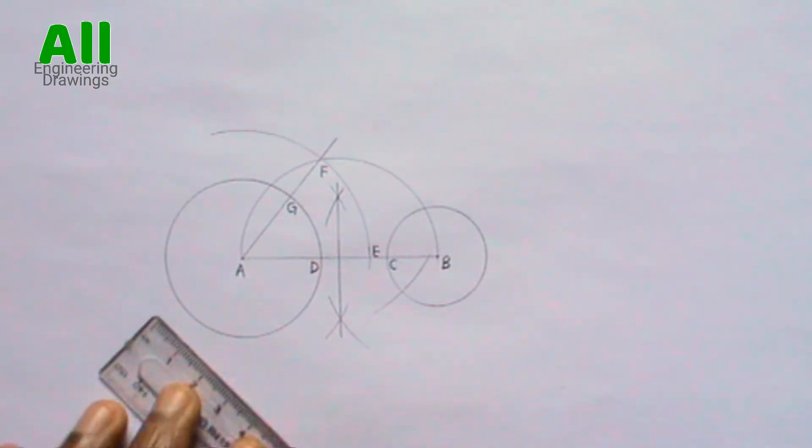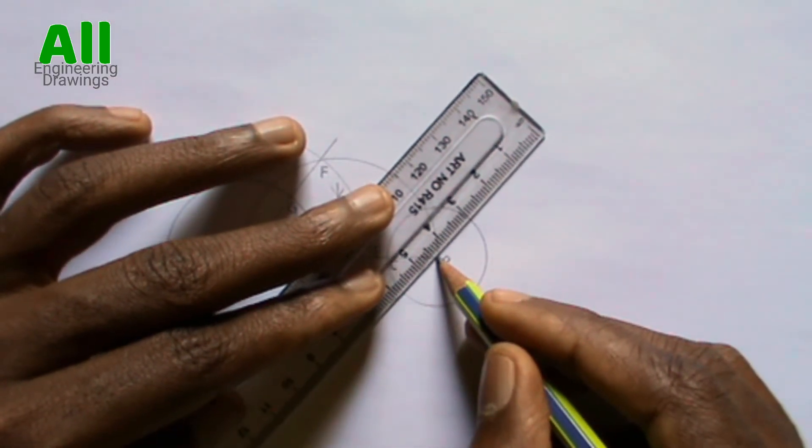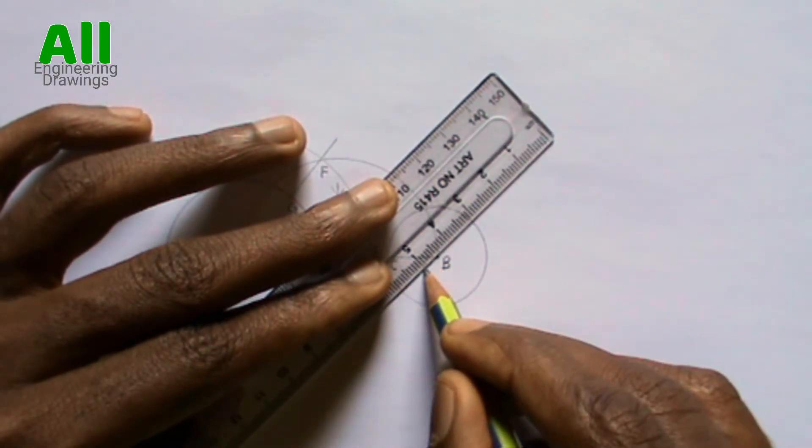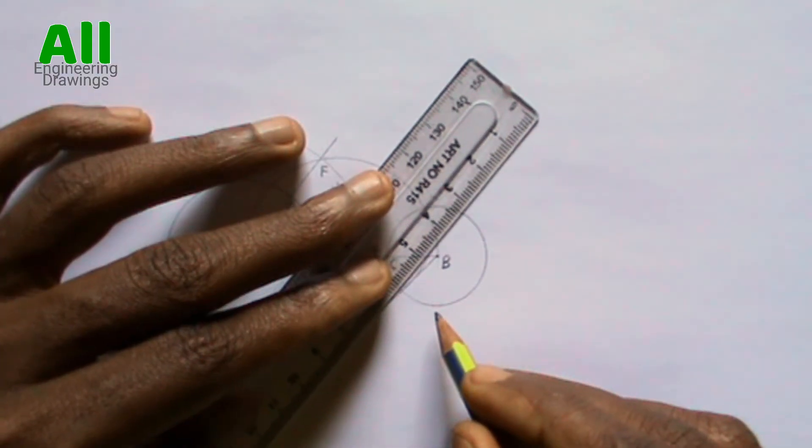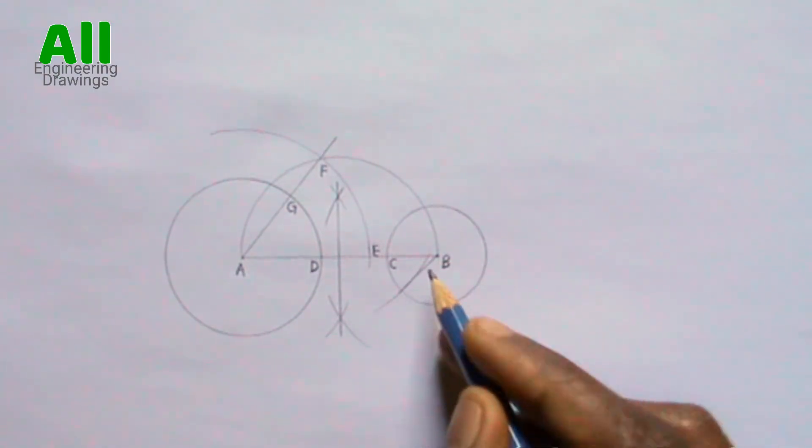After that draw a line from point B across the top of the arc you drew. Label the point where the line intersects this cycle.